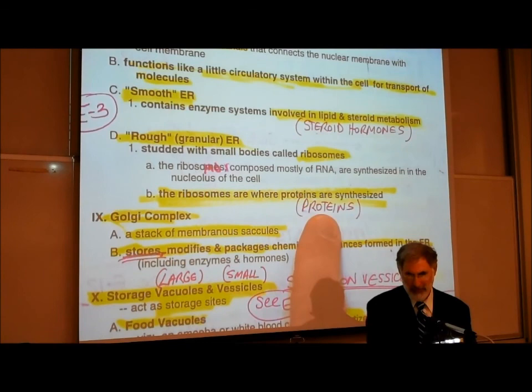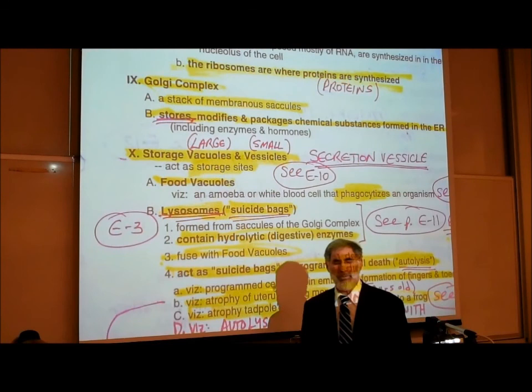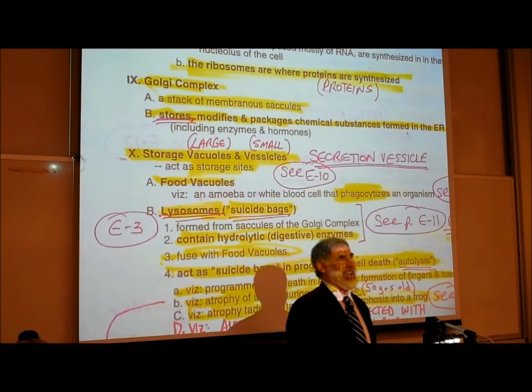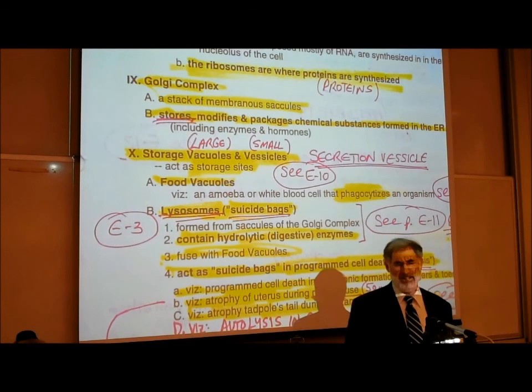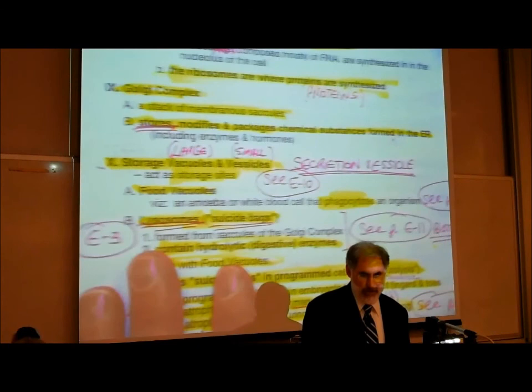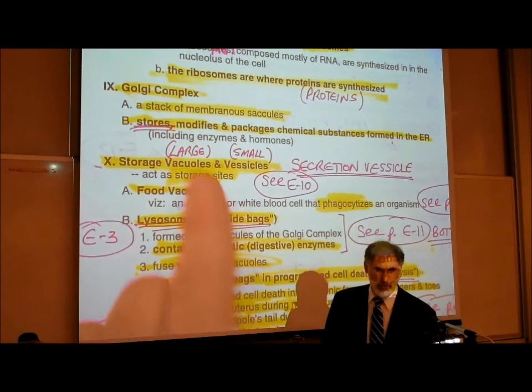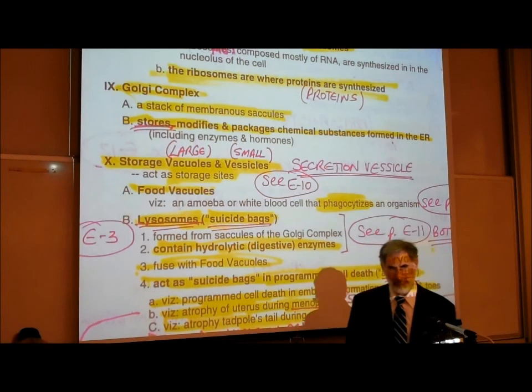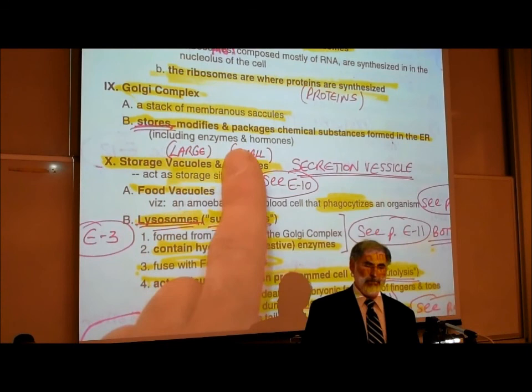The Golgi complex — also called the Golgi body or Golgi apparatus — is a stack of sacs that looks like a stack of pancakes, named after cell biologist Emilio Golgi. The purpose of those sacs is that chemicals can be stored and modified there. Both proteins made in the rough ER and steroid hormones made in the smooth ER can be temporarily stored in the flat sacks of the Golgi complex.